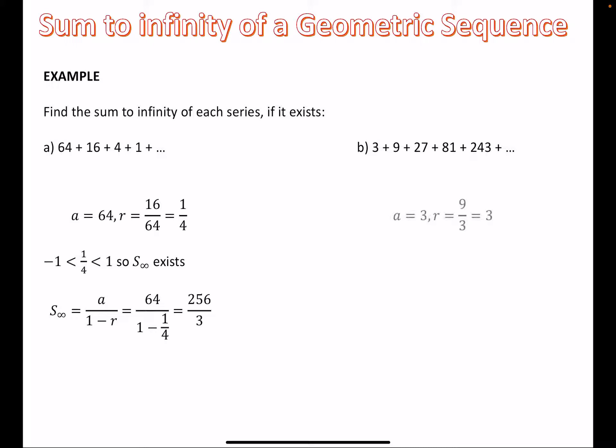For the second one, though, the first thing we want to establish is the first term, easy enough, and then the common ratio. But the fact here is that the common ratio is not between minus 1 and 1, in which case, a sum to infinity does not exist. To be fair, you probably have to make it a little bit clearer than I've made it there. It doesn't exist because 3 is greater than 1.